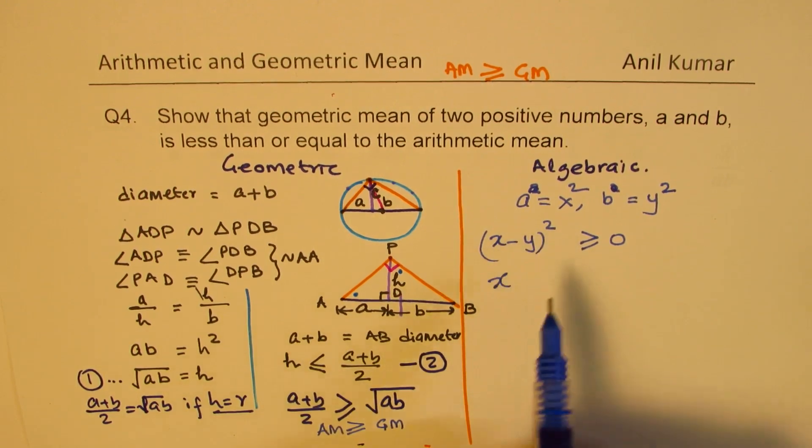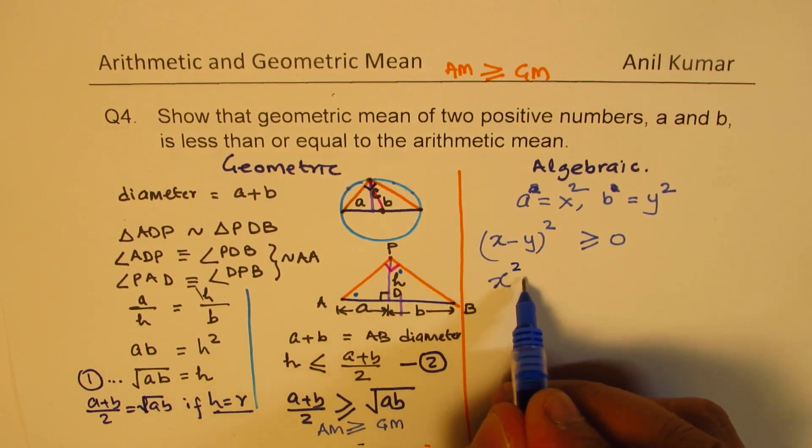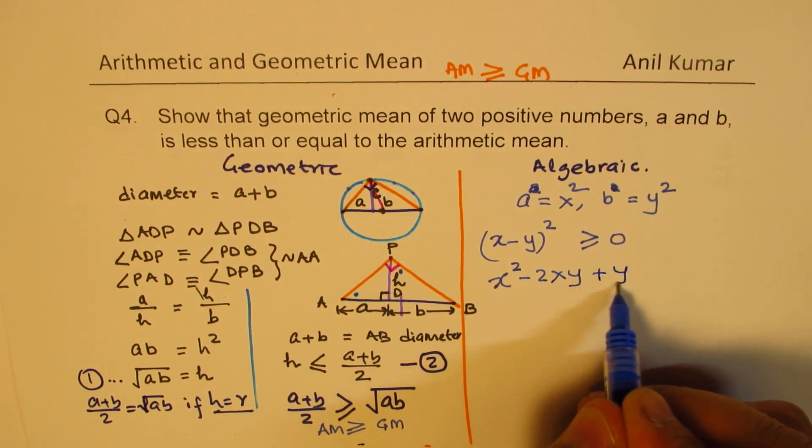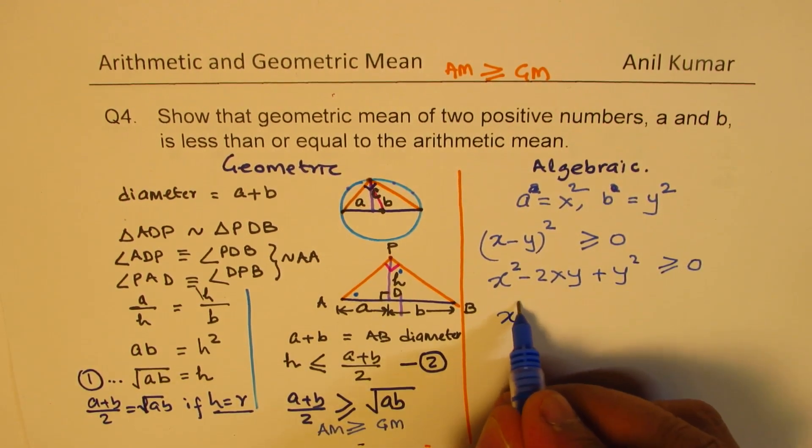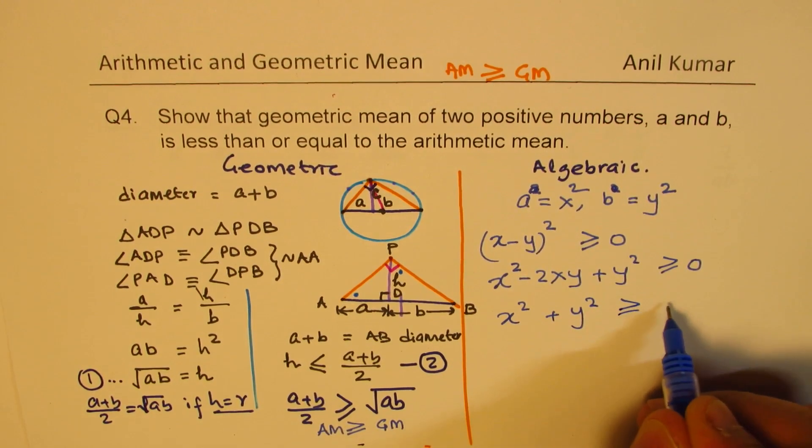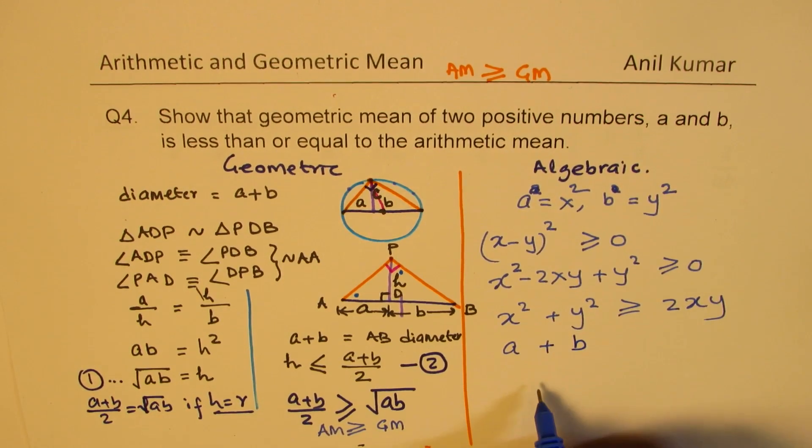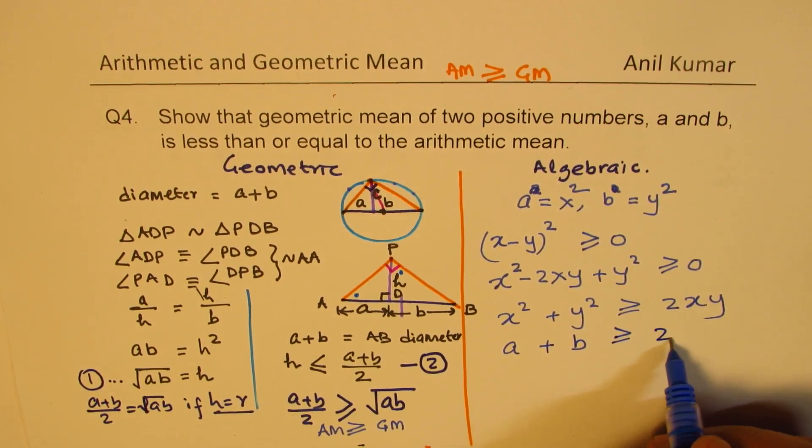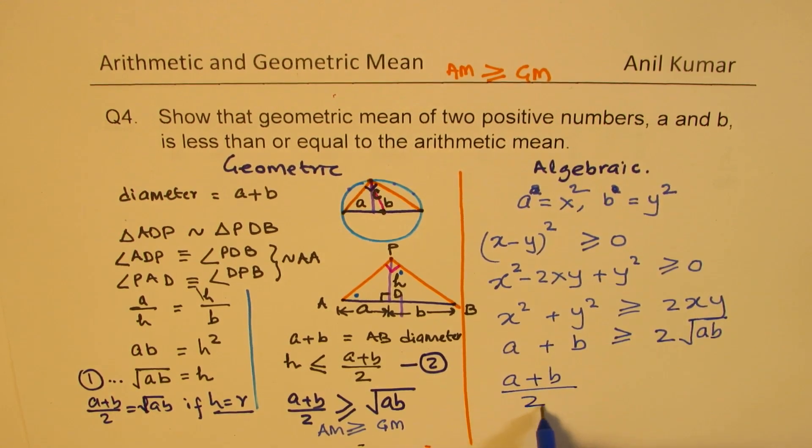We will begin with 4. So let A be equals to X square, B equals to Y square. In that case, X minus Y whole square is a positive quantity. It has to be greater than or equal to 0. So when you expand this, you get X square minus 2XY plus Y square should be greater than or equal to 0. Taking this to the right side, we get X square plus Y square is greater than or equal to 2XY. Now X square is A, so we can write this as A. Y square is B, so let's write this as B, is greater than or equal to 2 times square root of AB.